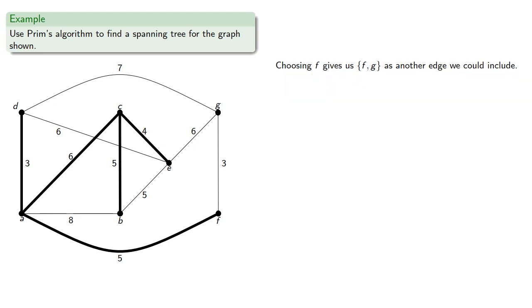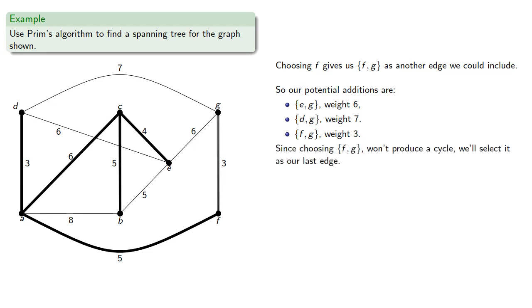Choosing F gives us FG as another edge we could include. So our potential additions are EG, DG, and FG. Since choosing FG won't produce a cycle, we'll choose it as our last edge.